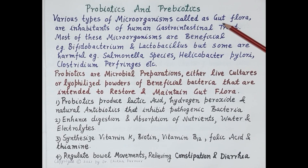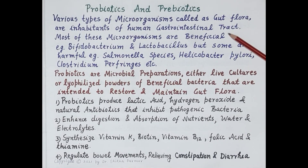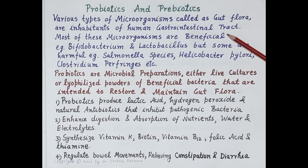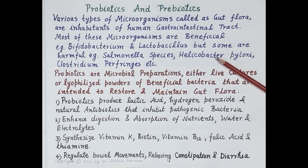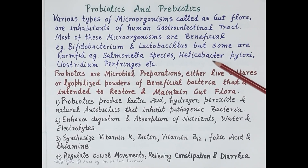Various types of microorganisms called gut flora are inhabitants of the human gastrointestinal tract. The majority of these microorganisms live in the large intestine, that is the colon. Majority of gut bacteria are non-pathogenic — they are beneficial and they aid in the metabolism of nutrients and drugs, and they prevent colonization of pathogenic microorganisms, thereby strengthening immunity. Most of these microorganisms are beneficial, for example Bifidobacterium and Lactobacillus, but some are harmful, for example Salmonella species, Helicobacter pylori, Clostridium perfringens, etc.